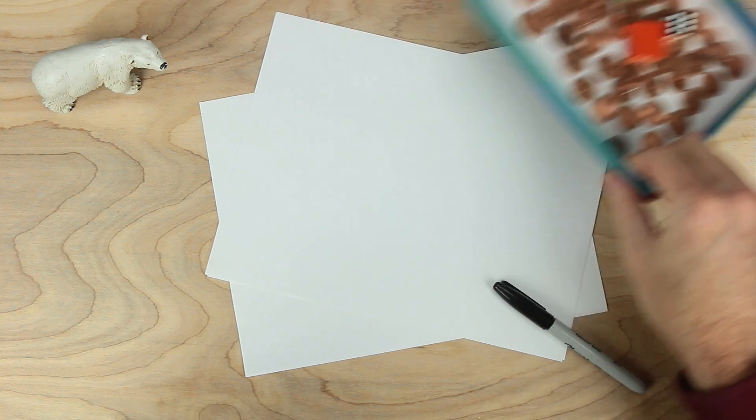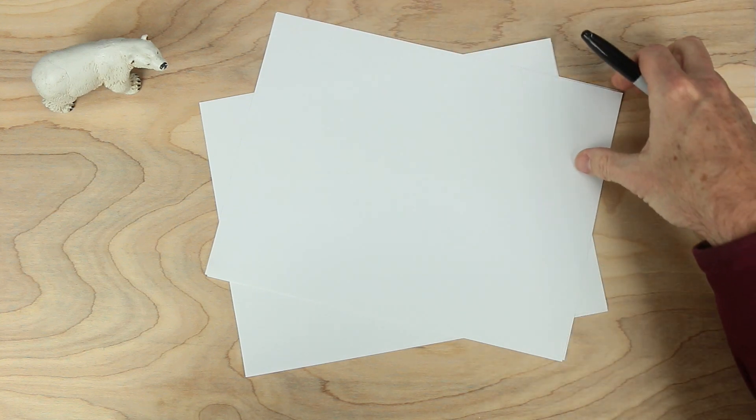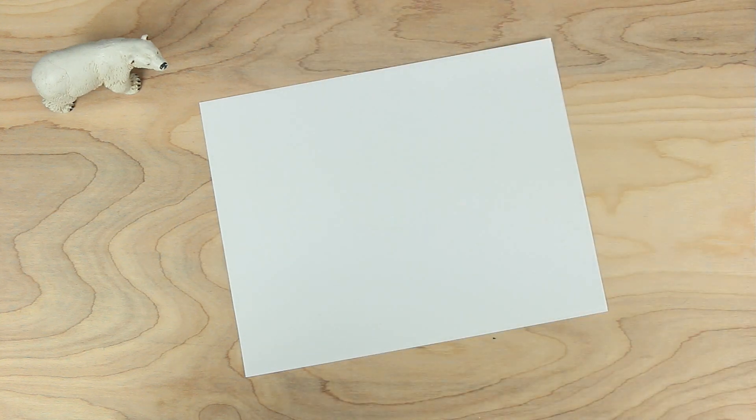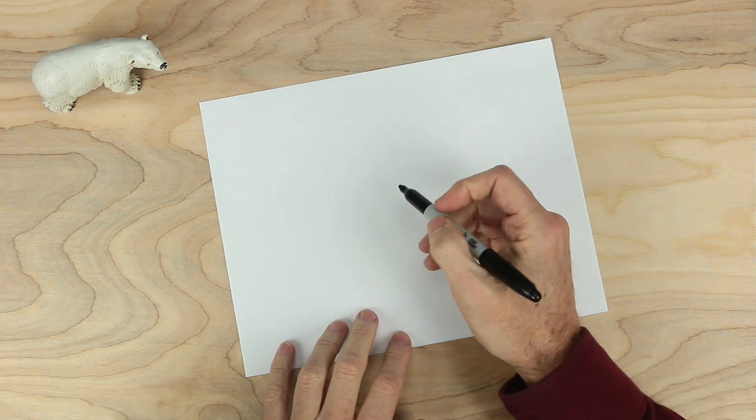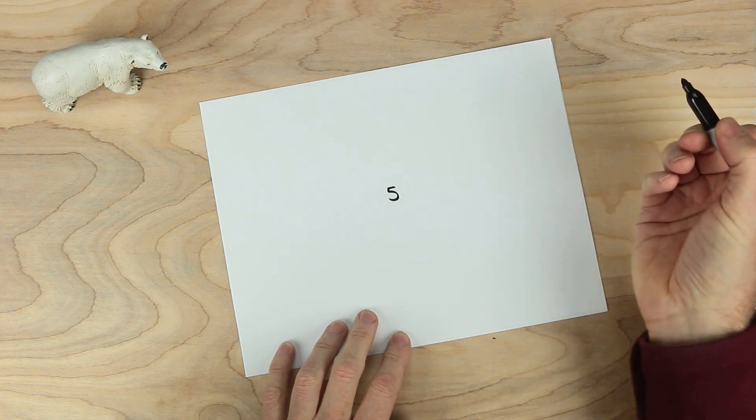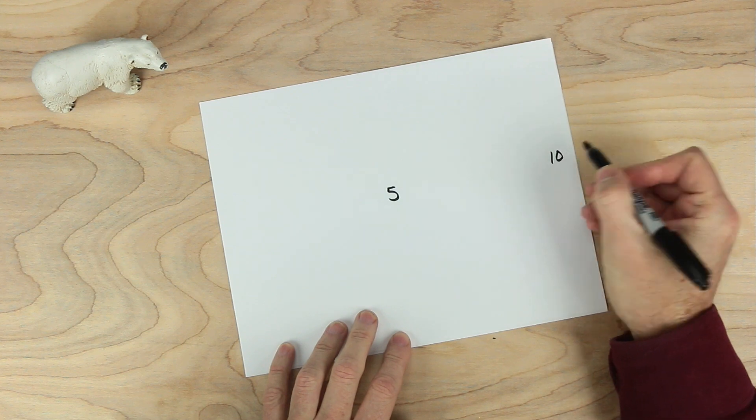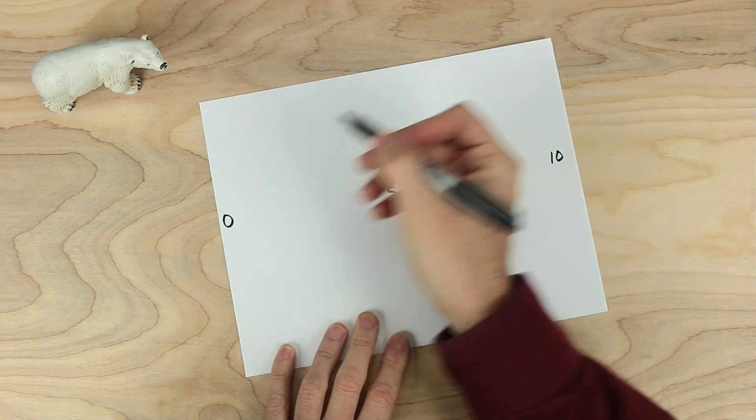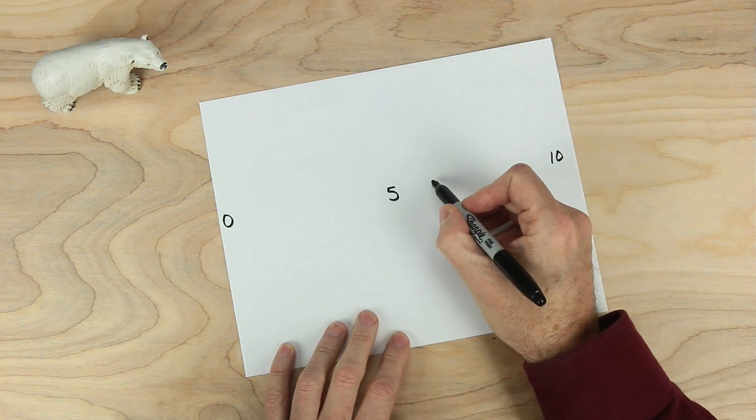So let's start with just one sheet of paper for our game board right now. On this sheet, let's go ahead and put the number five right in the middle, ten on one end and zero on the other, and the in-between numbers as well.